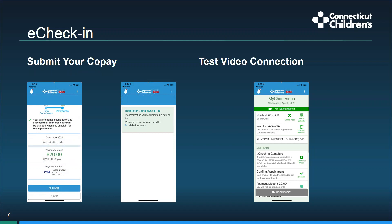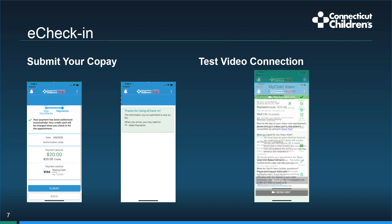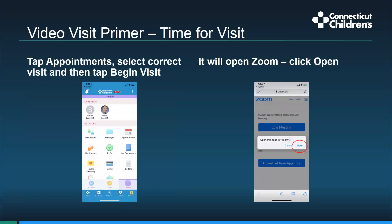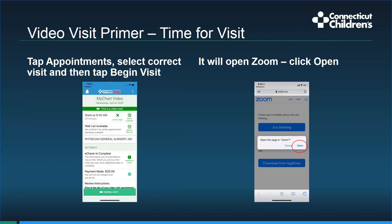You can now test the video connection. Scroll to the bottom and tap Zoom test. This is a great way to make sure that everything is working prior to your appointment. Now it's time for that video visit with your provider at Connecticut Children's. Use your device and access MyChart either through the MyChart standalone app or the Connecticut Children's app. Tap the appointment, select the desired appointment, and tap begin visit. The encounter will try to launch in Zoom — tap open and this will launch a Zoom meeting.